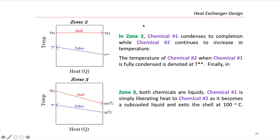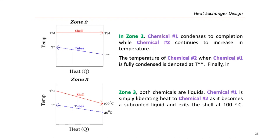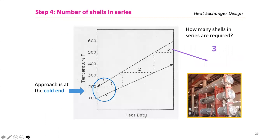In zone two, chemical one condenses to completion while chemical two continues to increase in temperature. The temperature of chemical two when chemical one is fully condensed is denoted T***. Finally, in zone three, both chemicals are liquid — chemical one simply liberates heat to chemical two as it becomes a sub-cooled liquid and exits the shell at 100°C. Once we establish our zones and thermal diagram, we solve like a regular heat exchanger but in pieces, using delta T1, delta T2, and the log mean temperature difference.